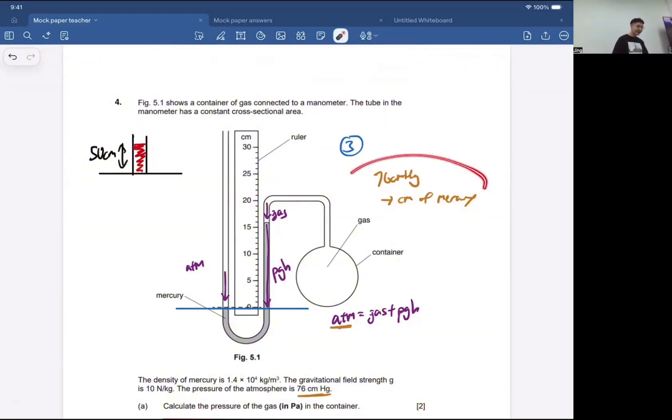So if you have 76 CM of Mercury, you just want to ask yourself: imagine I have 76 CM of Mercury. How to find the pressure of this? Yeah, you just take ρgh.